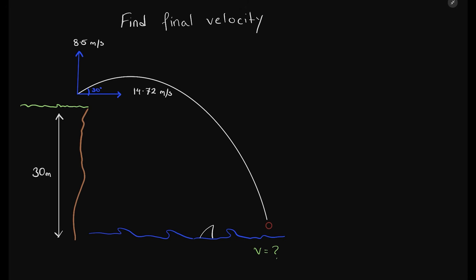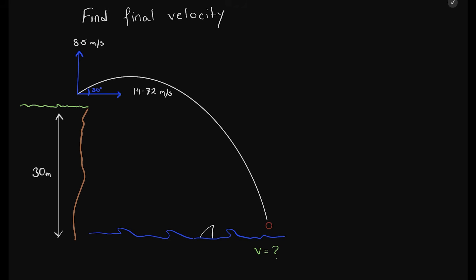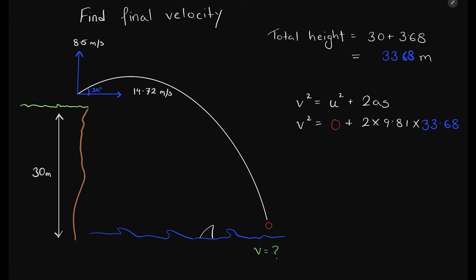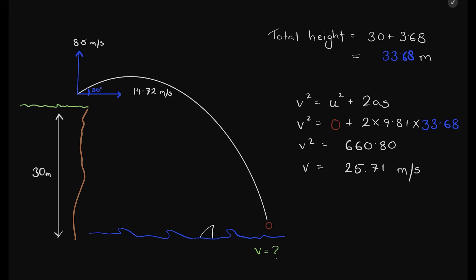The next question asks: at what vertical speed is the ball landing on the water? As we know, at the top the vertical velocity is zero, so we will use that to find the correct equation. The total height of the ball above sea level is 33.68 meters. The initial vertical velocity is zero, and as the ball is falling towards the ground, we use a positive value for acceleration. The answer comes out to be 25.71 meters per second.